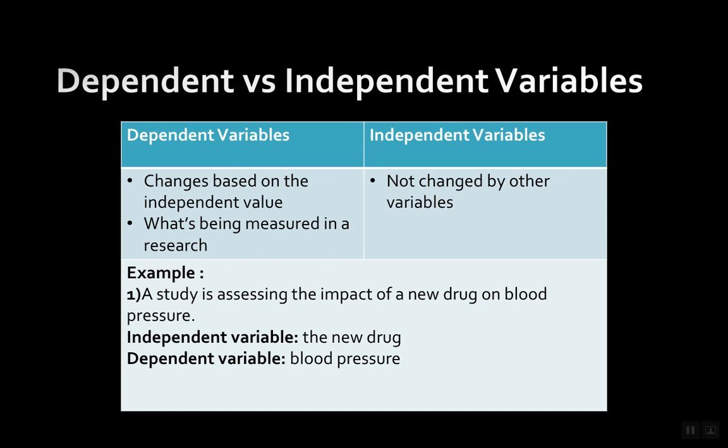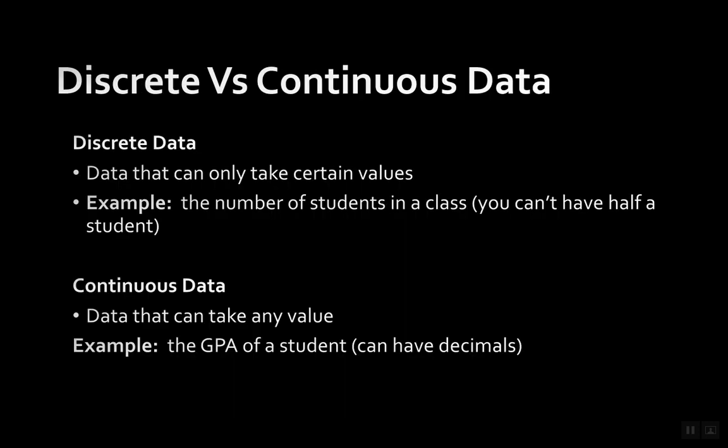So if a study is assessing the impact of a new drug on blood pressure, the only thing that's going to change is the blood pressure numbers — this is what we are measuring in the study. So that would be the dependent variable. Blood pressure is dependent on something to cause its change, and in this case that would be the independent variable, which is the new drug.